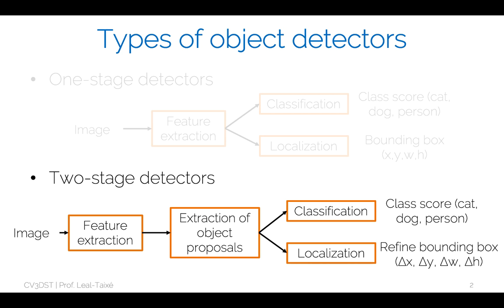Two-stage detectors take an image and perform feature extraction using a CNN. They divide detection into two steps: first, extraction of object proposals, and second, once these proposals have been extracted and selected, a classification step — semantic classification — to determine whether an object represents a dog, a cat, or a person. A second head performs localization, which is essentially a refinement of the bounding box.